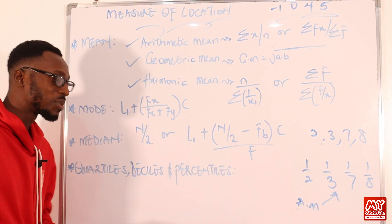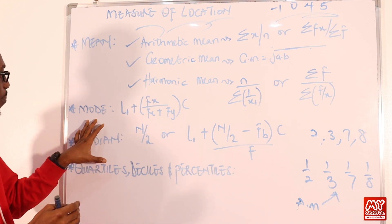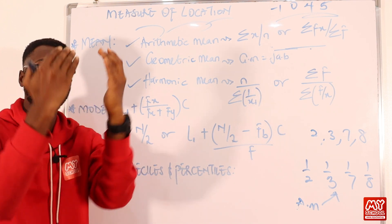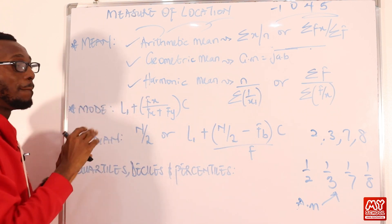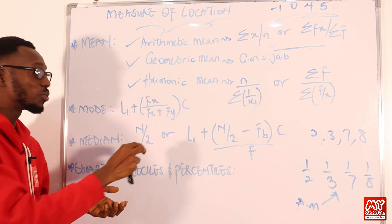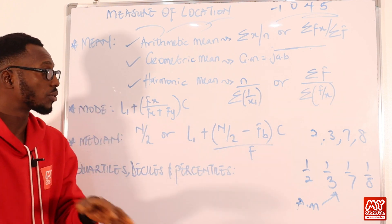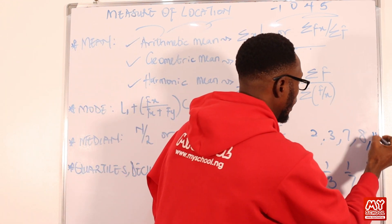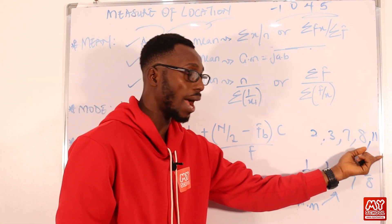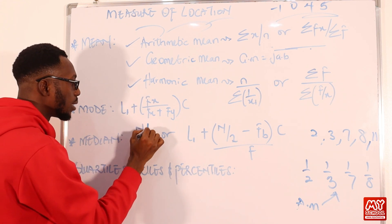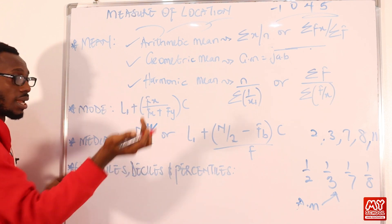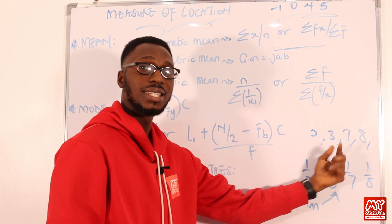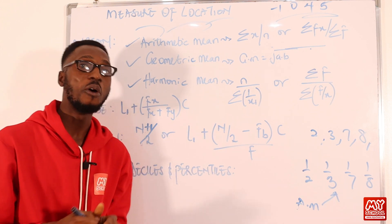Median is the measure that divides your data into two equal halves — the middle value. For ungrouped data, if the number of items is odd, the median is the middle value at position (n+1)/2. If the count is even, you pick the two middle values and average them. For example, with values 3 and 7 in the middle: (3+7)/2 = 10/2 = 5. That is the median for ungrouped data.